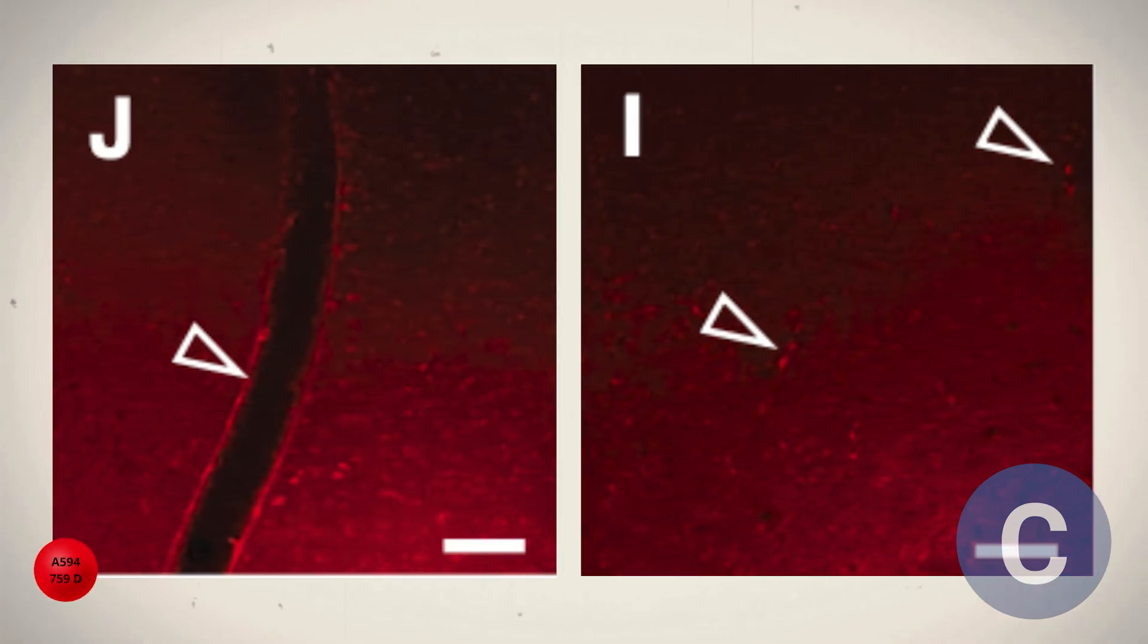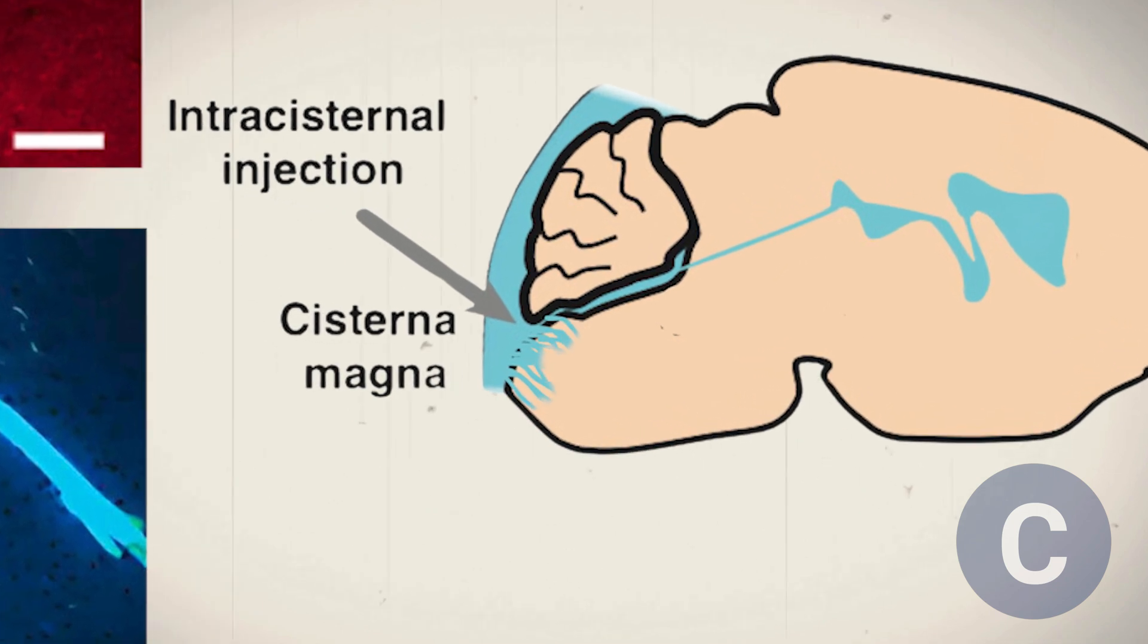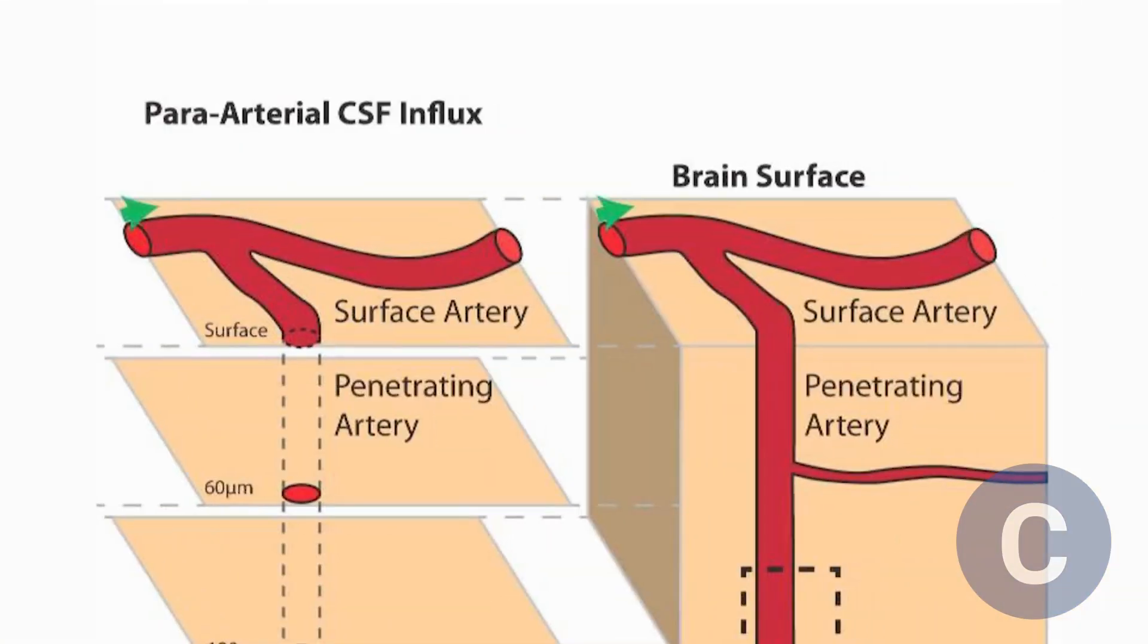Lastly, the smallest tracer, A594, in red, moves more quickly and deeply into the brain parenchyma. By observing the tracers near the arterioles, they suggested that cerebrospinal fluid from the cisterna magna enters the brain parenchyma along these small arteries.